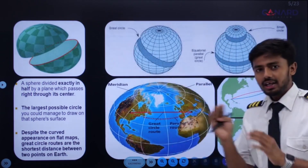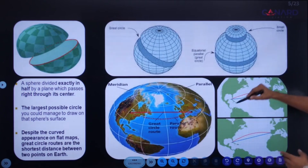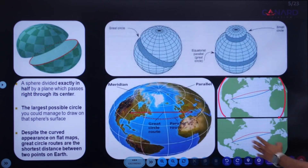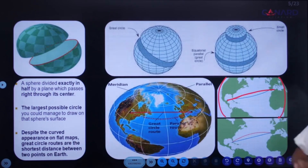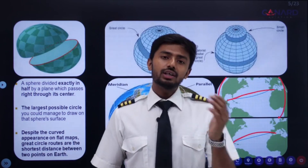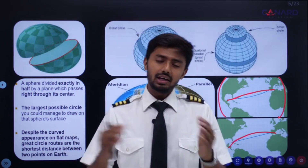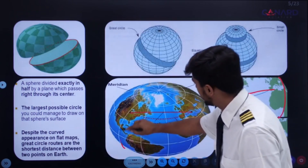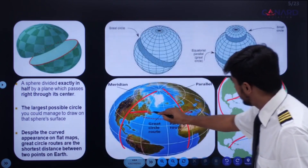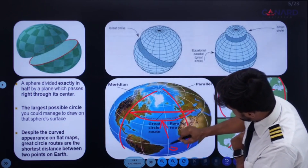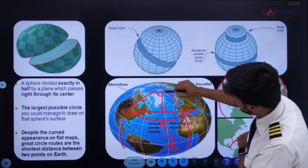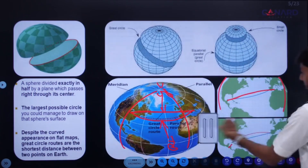On a spherical model of the Earth, a great circle is always a straight line. On a flat model of the Earth, a great circle is always a curved line. All aircraft always follow great circle tracks because great circle distance is the shortest distance between any two points. This is called rhumb line distance, and this is called great circle distance.